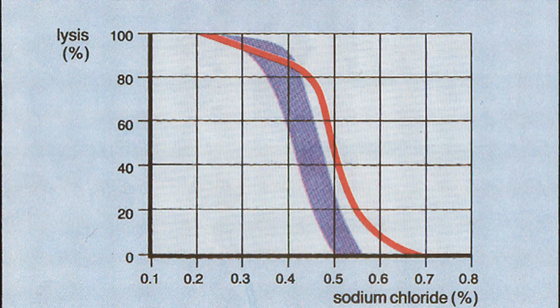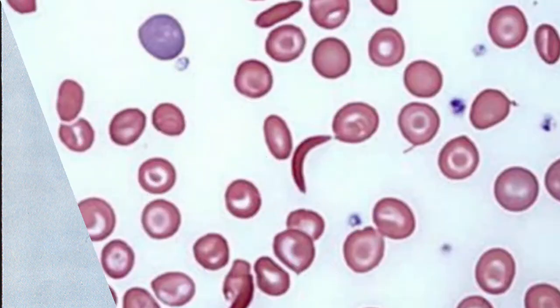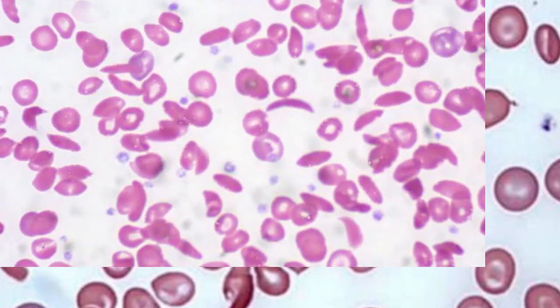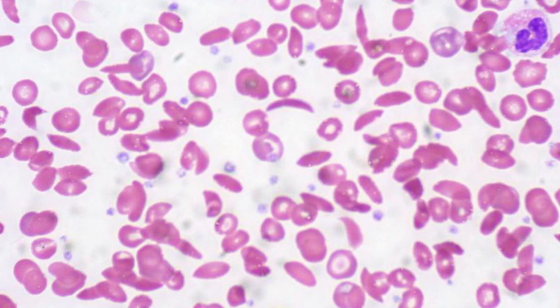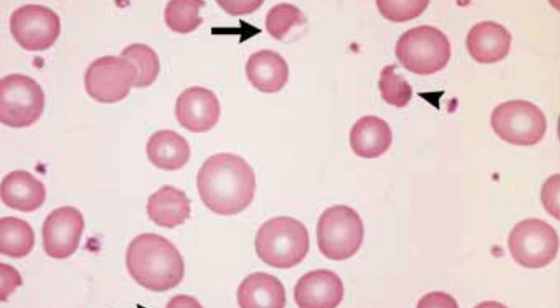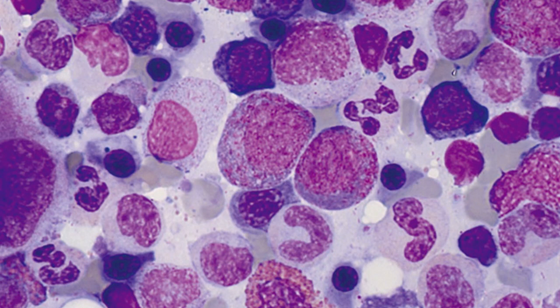Osmotic fragility test is done to diagnose thalassemia and hereditary spherocytosis. Sickle cell preparation is a screening test to identify if sickle cell trait or sickle cell disease is causing the hemolysis. Hemoglobin electrophoresis can give more detailed information about abnormal hemoglobin. G6PD: a decreased level of G6PD enzyme can oxidize hemoglobin, causing the formation of Heinz bodies in peripheral smear, resulting in hemolysis of RBCs.